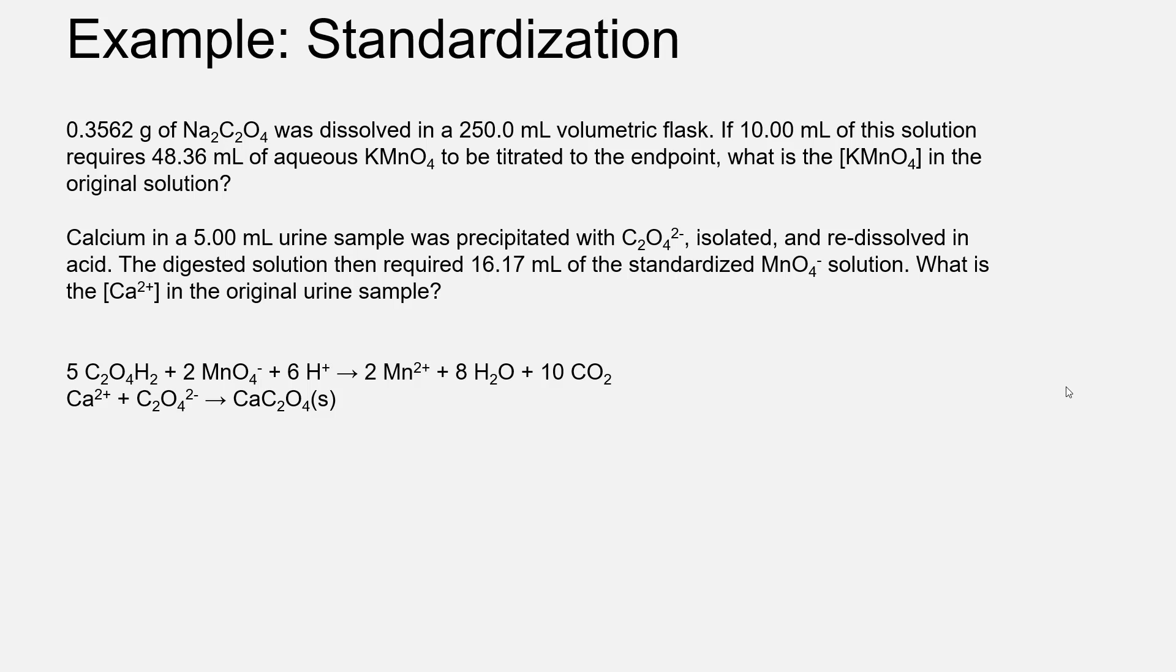This problem is going to deal with this potassium permanganate titration and it's going to cover a standardization step and then a titration for calcium using the standardized permanganate solution. We're told that 0.3562 grams of sodium oxalate was dissolved in a 250 mL volumetric flask. If 10 mL of this solution requires 48.36 milliliters of aqueous potassium permanganate to be titrated to the endpoint, what is the potassium permanganate concentration in the original solution?